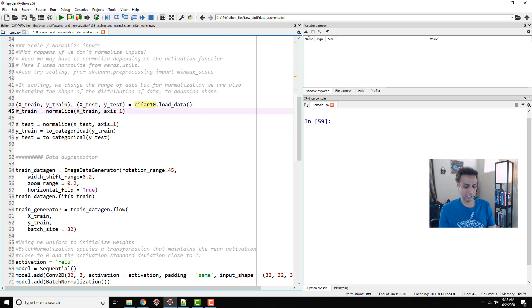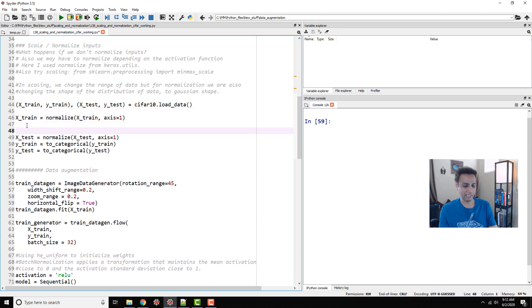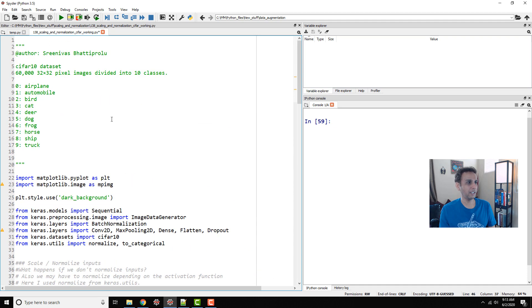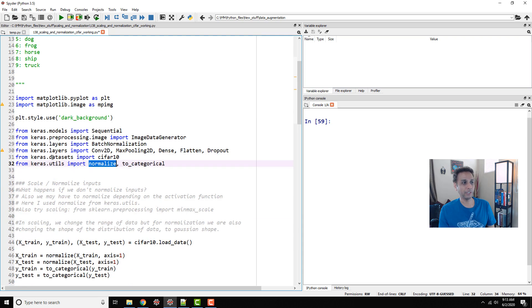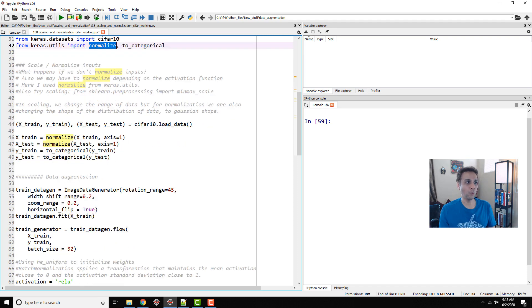As you can see, I'm normalizing the dataset by using normalize from keras.utils. You can do it many ways. This is just one way of normalizing. You can actually scale it. Just divide the values here by 255 and you're all set. You can try that. I'll let you discover the effect of normalize versus scaling. But the point is here, all my values are converted to floating point between 0 to 1.